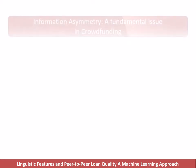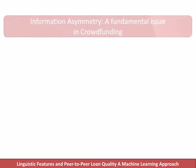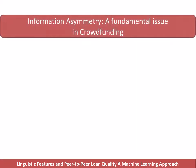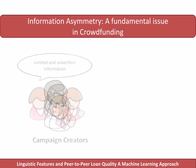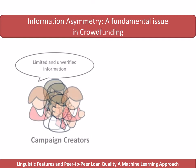Crowdfunding has been growing very quickly for the last few years at a rate over 80% year-by-year. However, information asymmetry remains a fundamental issue in crowdfunding because we have limited and often unverified information about crowdfunding campaigns and their creators.